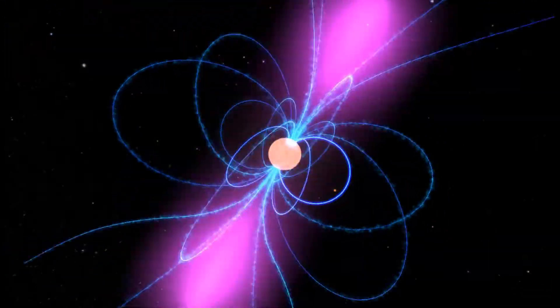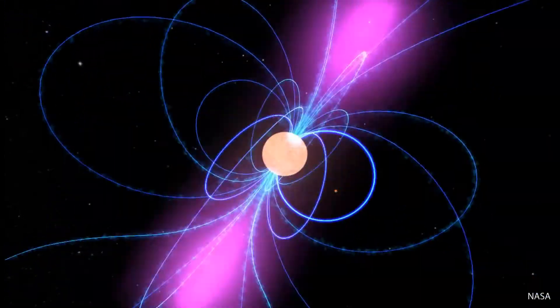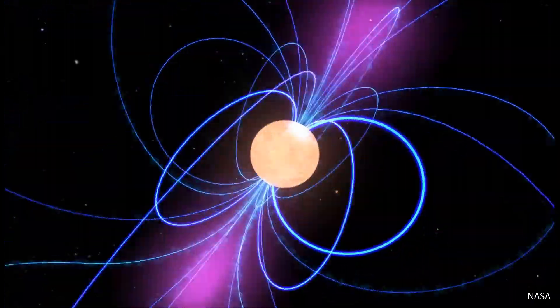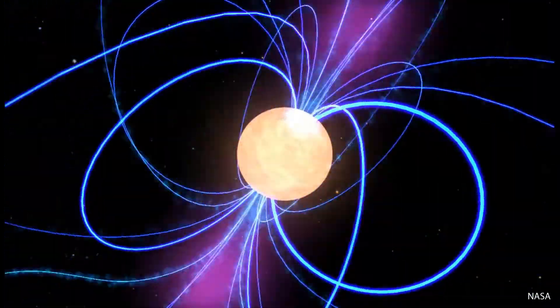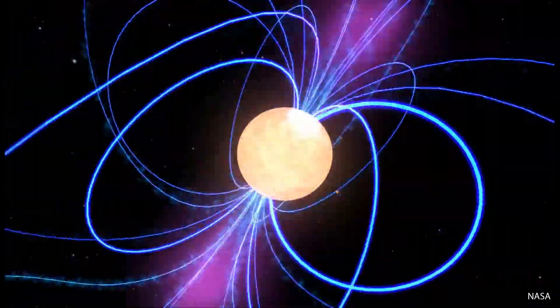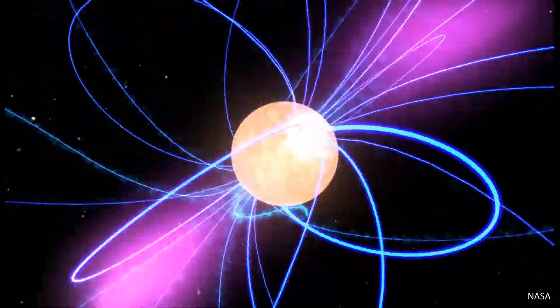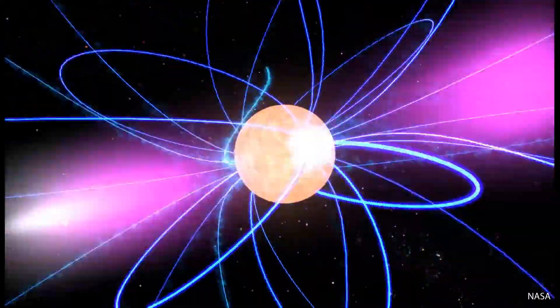Another interesting property of neutron stars are their magnetic fields whose strength ranges from 10 to the power of 4 to 10 to the power of 11 Tesla, which is 100 million to 1 quadrillion times stronger than Earth's magnetic field.